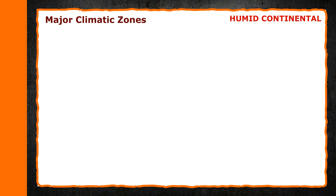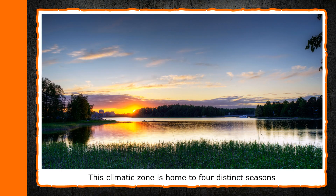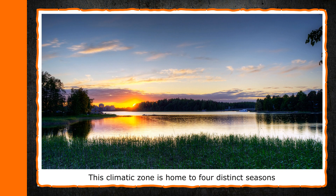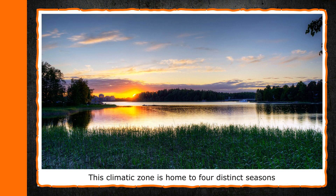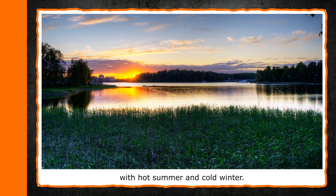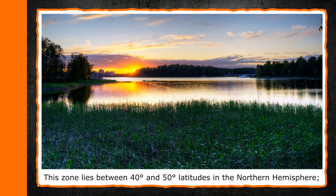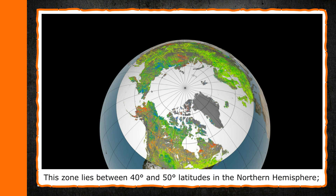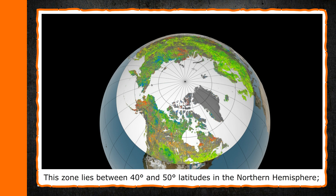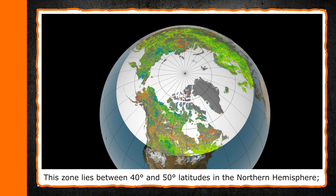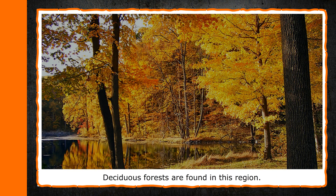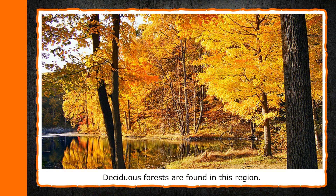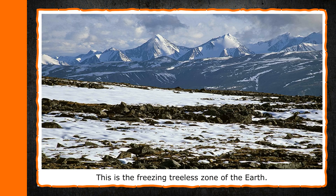Humid Continental. This climatic zone is home to four distinct seasons with hot summer and cold winter. This zone lies between 40 degree and 50 degree latitudes in the northern hemisphere. Deciduous forests are found in this region.